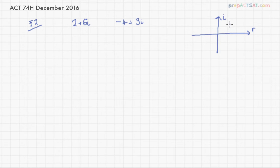So 2 plus 6i, if that's here, that's 6 and that's 2. This is just a representation of this. It's telling us that the real part of this number is 2 and the imaginary part is 6.